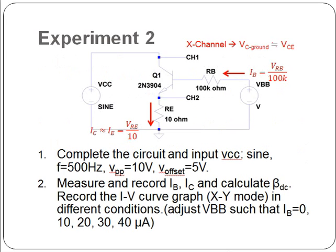Experiment 2: We want you to see the characteristic curve of the bipolar junction transistor. Complete the circuit and input the VCC with a sine wave of frequency 500 Hz and peak-to-peak voltage of 10V with an offset of 5V.